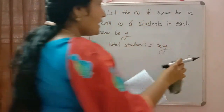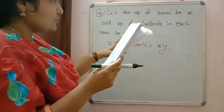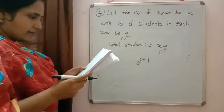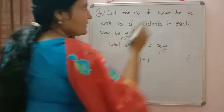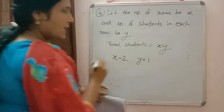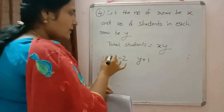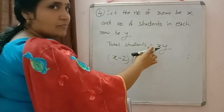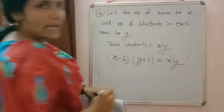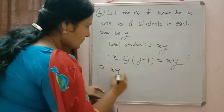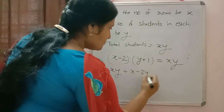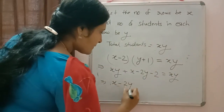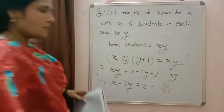If one student is extra in a row (y+1) there would be 2 rows less (x-2). So (x-2)(y+1) = xy. Simplifying: xy + x - 2y - 2 = xy. Cancelling xy gives equation 1: x - 2y = 2.